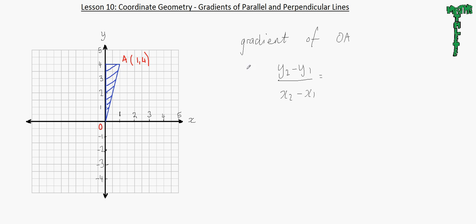And so y2 here is 4 minus 0, because the origin is 0,0, and 1 minus 0. So the gradient is 4 over 1, which is 4. So that's the gradient of OA.